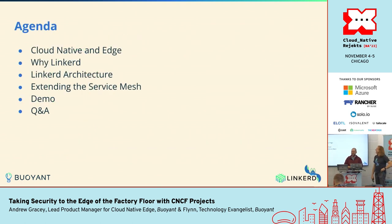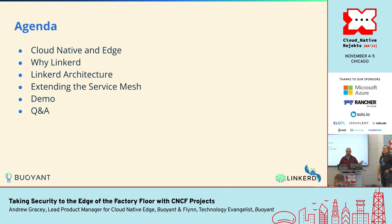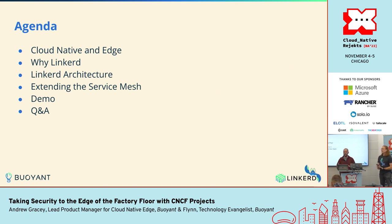We're going to talk through a couple of different things. I'll give a quick overview of Cloud Native and Edge and how those two things work together. Flynn's going to talk about why specifically we're using Linkerd and then the Linkerd architecture. Then we're going to talk about extending the service mesh, give a quick demo, talk about where we're going next, and then some time for Q&A.